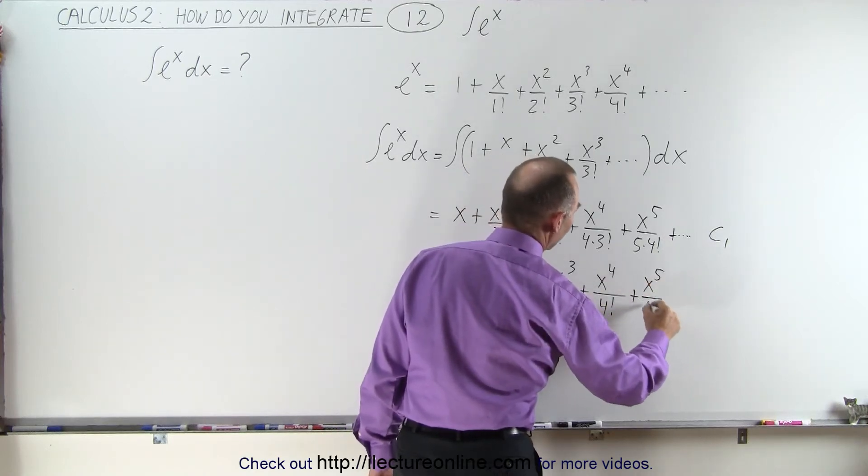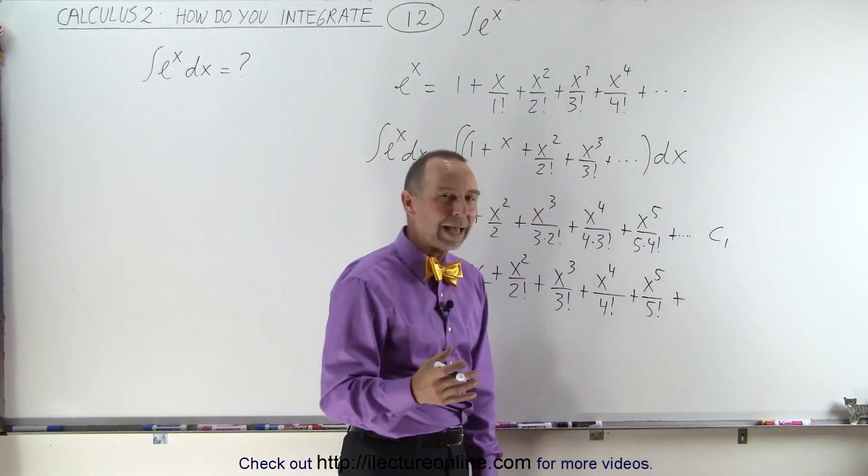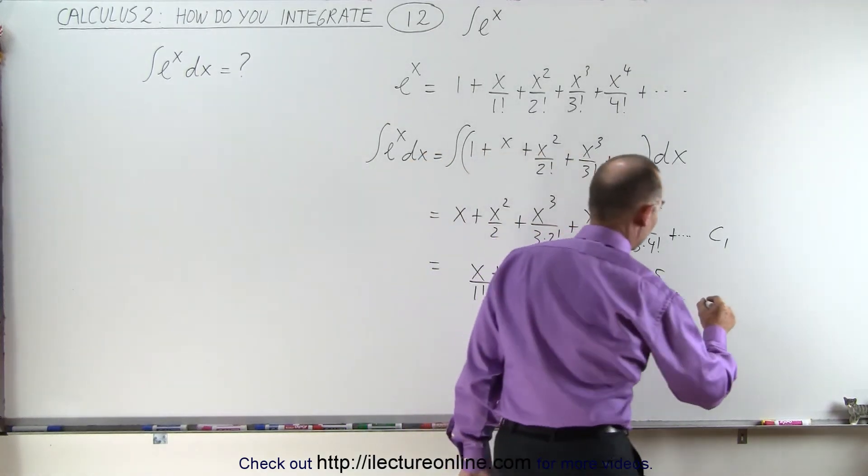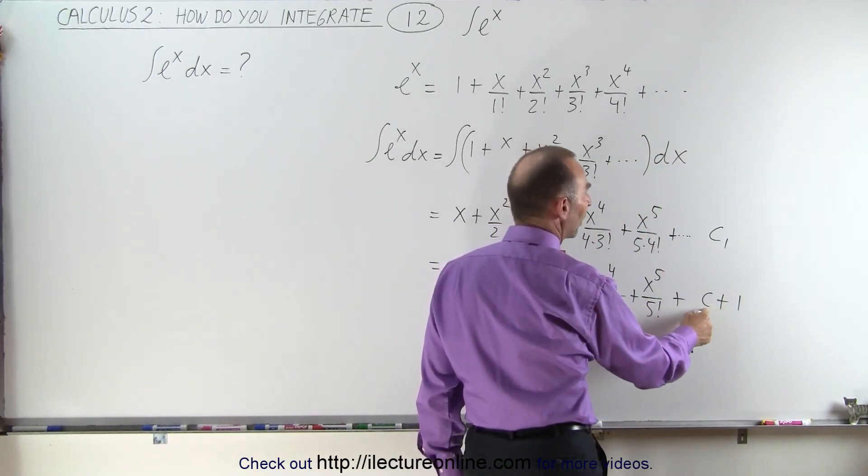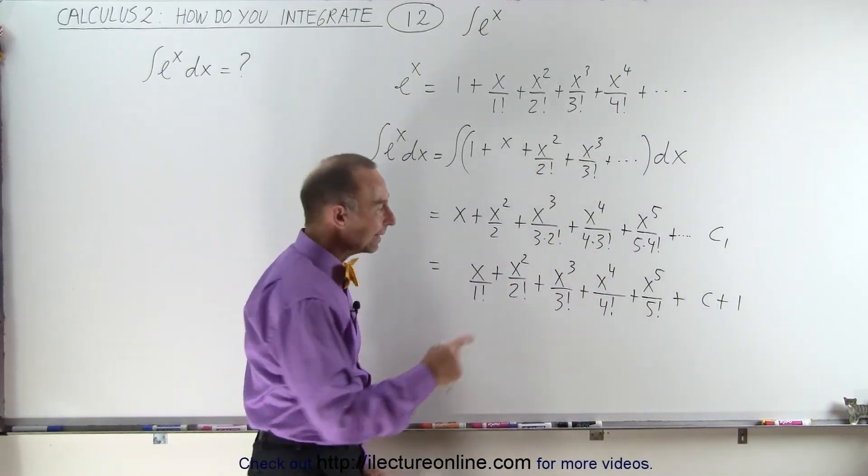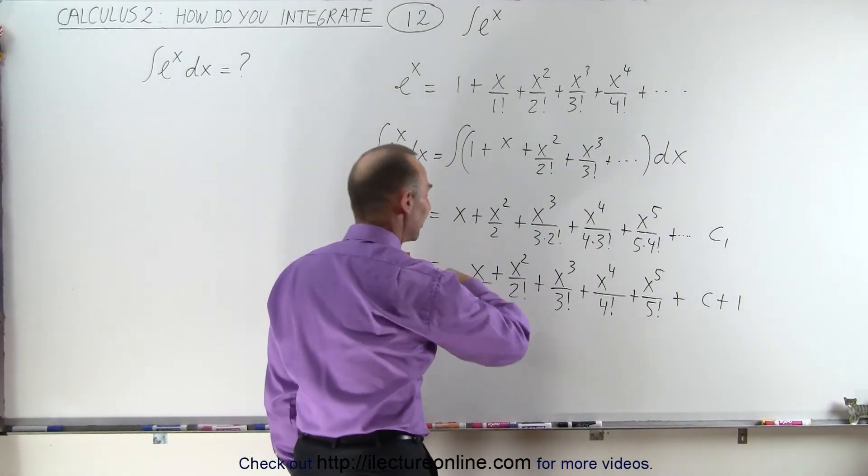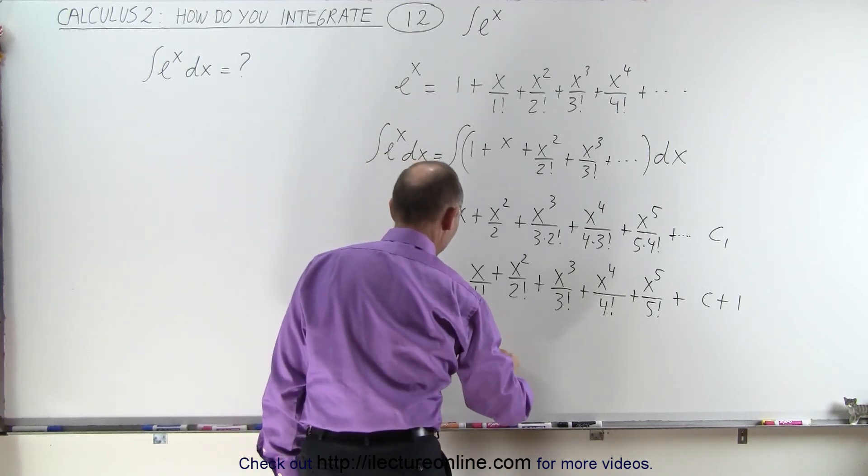I can write C1 as C plus 1, because no matter what C1 is, I can rewrite it as some constant C and add 1. Then I can take that 1 and combine it with the series, so this can be written as 1 plus x over 1 factorial...